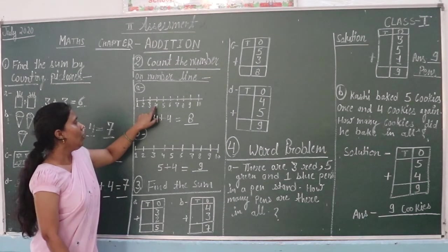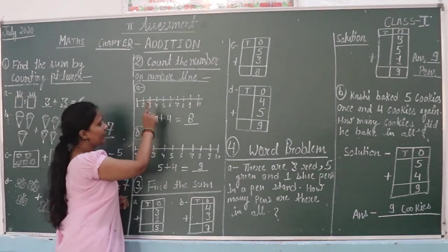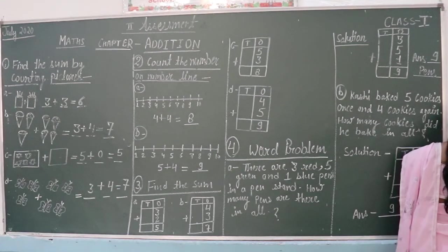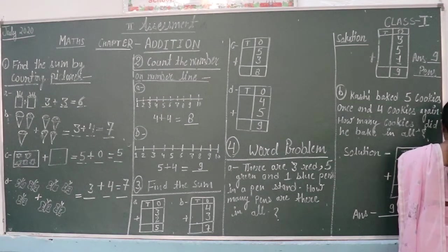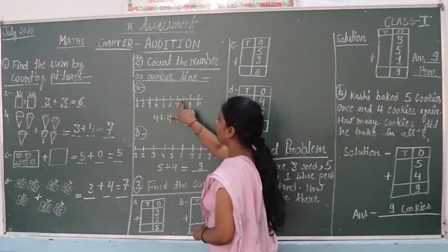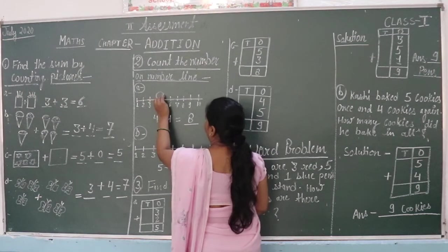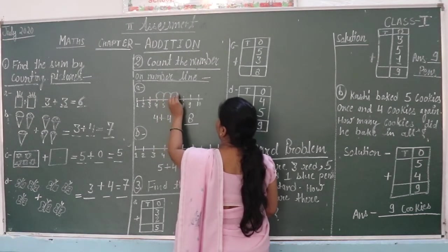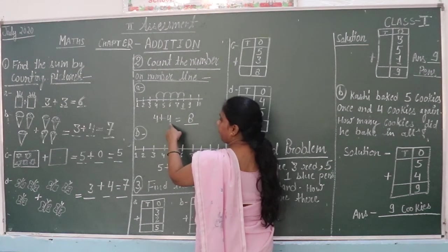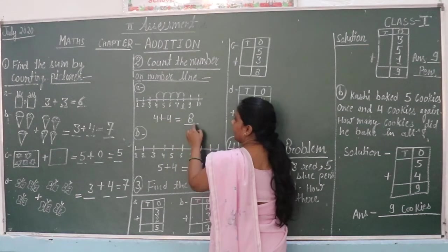1, 2, 3, 4. In 4, we will add 4. Question: 4 plus 4. One, two, three, four. What is the answer? Eight. The answer is eight.